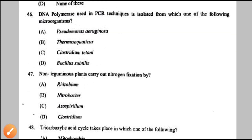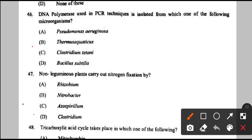Question number 46: DNA polymerase used in PCR technique is isolated from which microorganism? Taq polymerase is a thermostable enzyme used in polymerase chain reaction and is isolated from the bacteria Thermus aquaticus — option B.